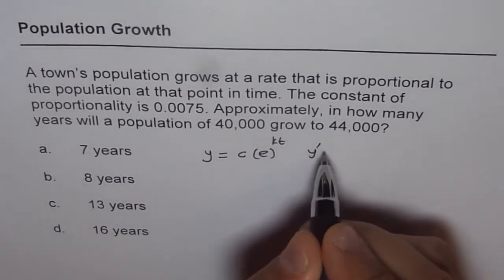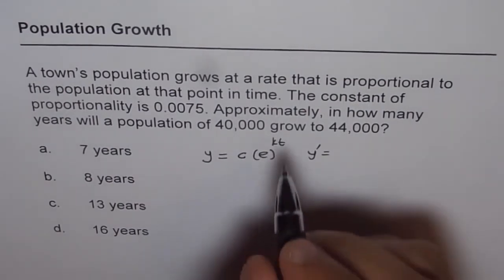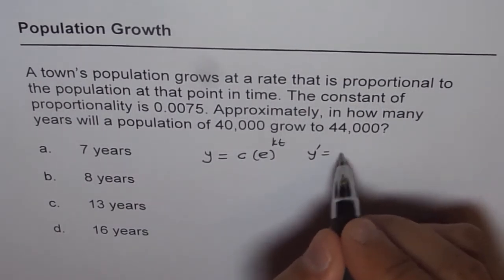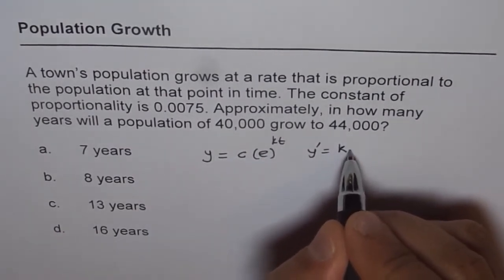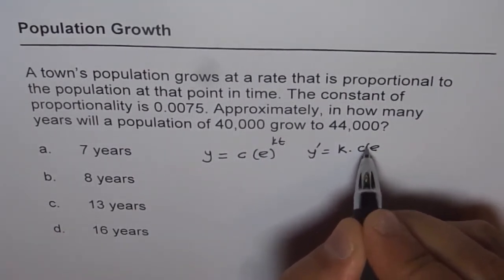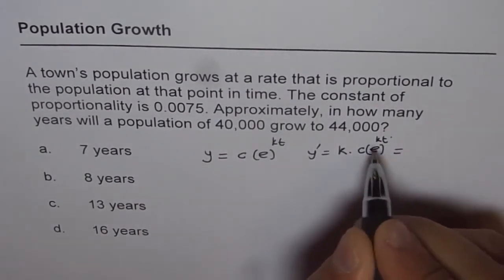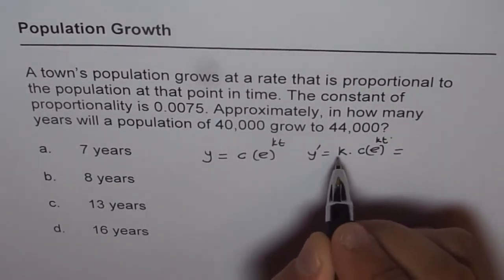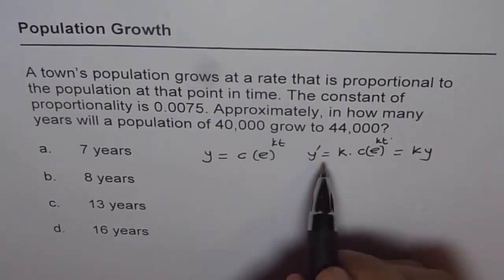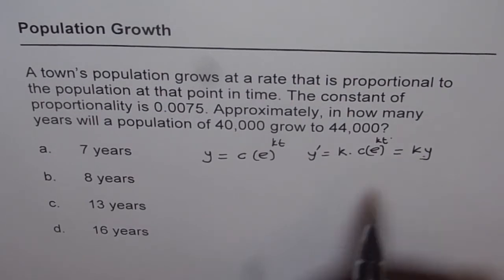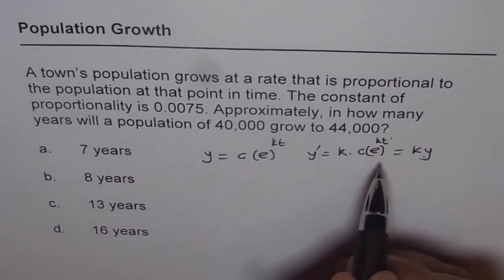The reason being, if you do y dash, what do you get? Y dash of this function is k times the function itself. That means k times c times e to the power of kt. This could be written as k times y. So the growth rate is proportional to the population itself. So that is the function which we are considering.